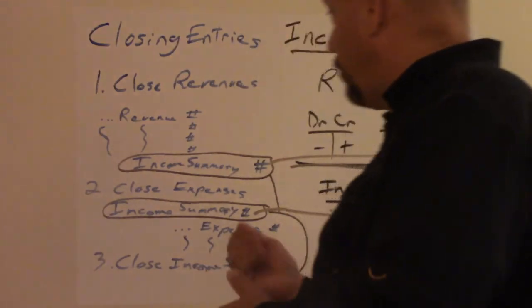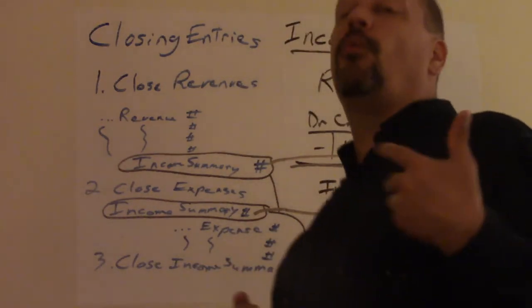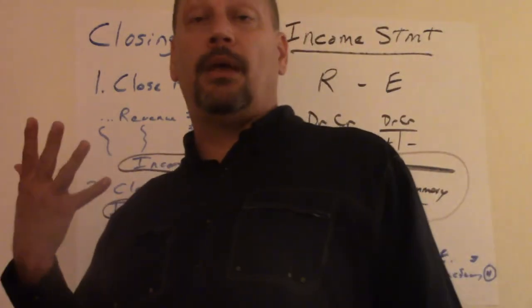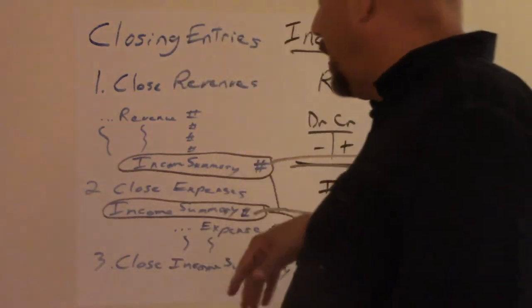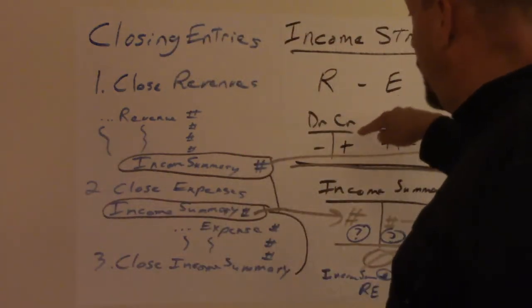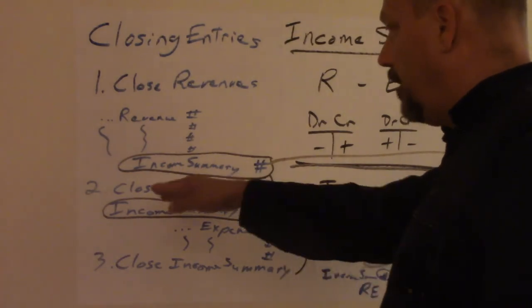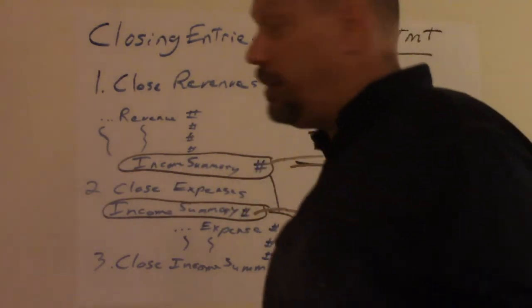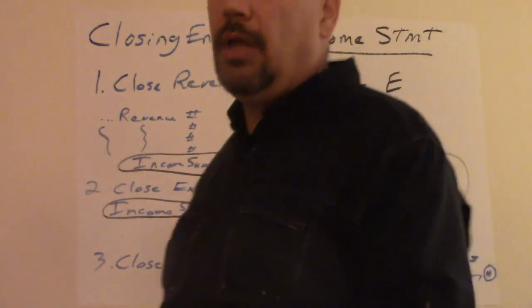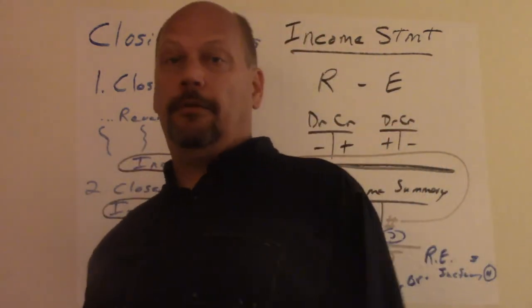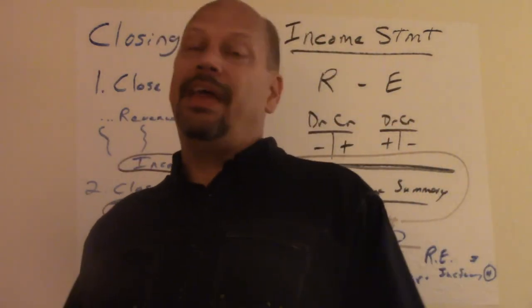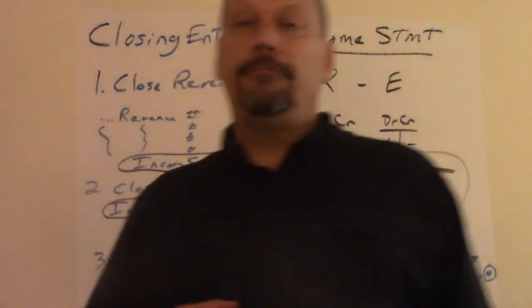So that's actually your closing entries. There is another way you can do it. You can actually skip the income summary. I'm not showing it. What you do is the same thing. You're going to debit all your revenue accounts, credit all your expense accounts, and instead of using income summary, do one entry and just one huge entry and just put retained earnings as the plug. That's another way of doing it and never using income summary. There's two ways. Thank you.